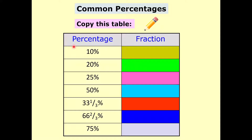So the first one: 10% as a fraction is 1 over 10. 20% as a fraction is 1 fifth. 25% is a quarter. 50% is a half.